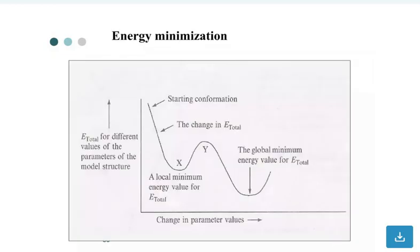You can see the E_total for different values of parameters of the model structure. Starting conformation, the change in E_total, the global minimum energy value for E_total, the local minimum energy value for E_total, and change in parameter values.